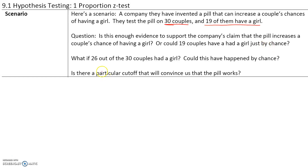What if 26 out of 30 couples had had a girl — could this have happened by chance? How do you know? Is there a particular cutoff that will convince us that the pill works? Companies make claims all the time, and it is up to statisticians to test these claims. This is what hypothesis testing is used for.